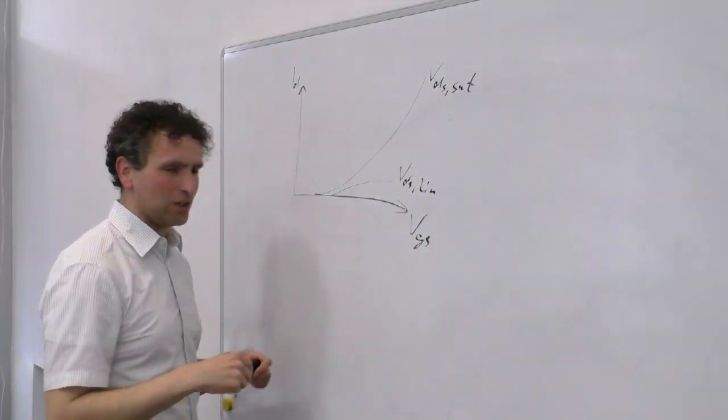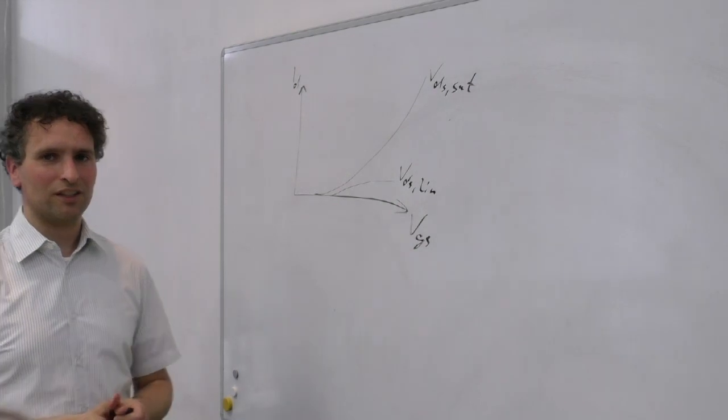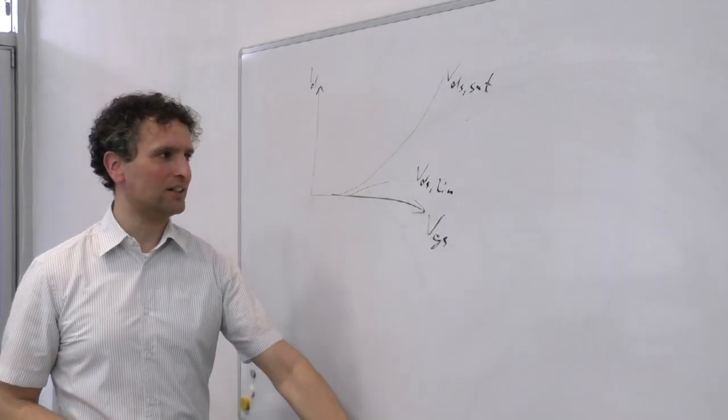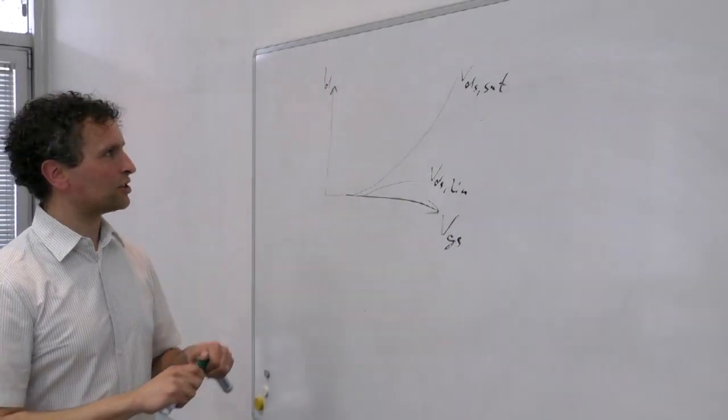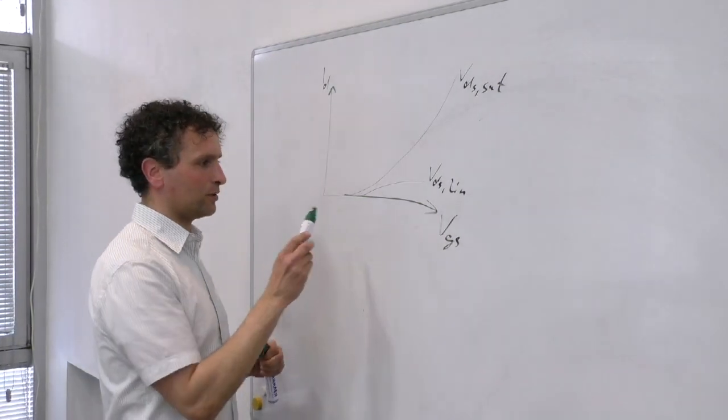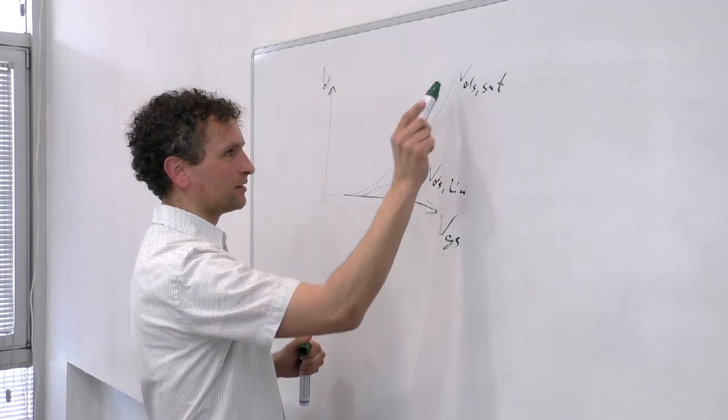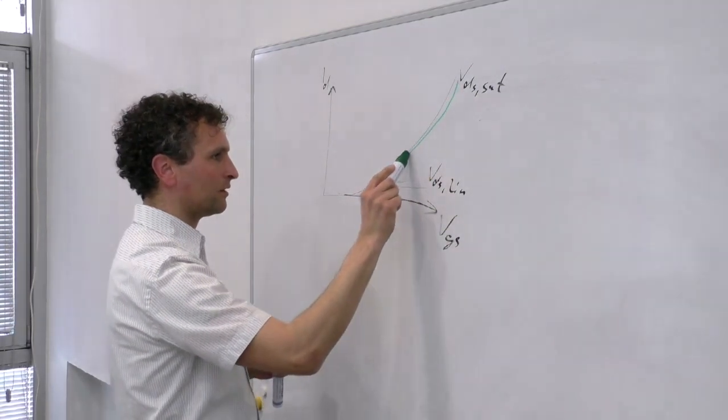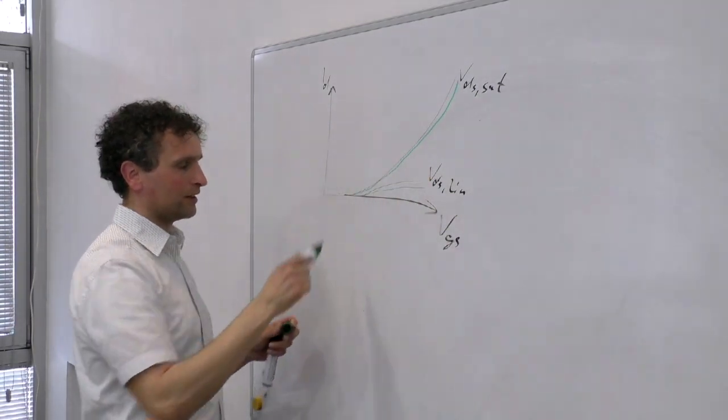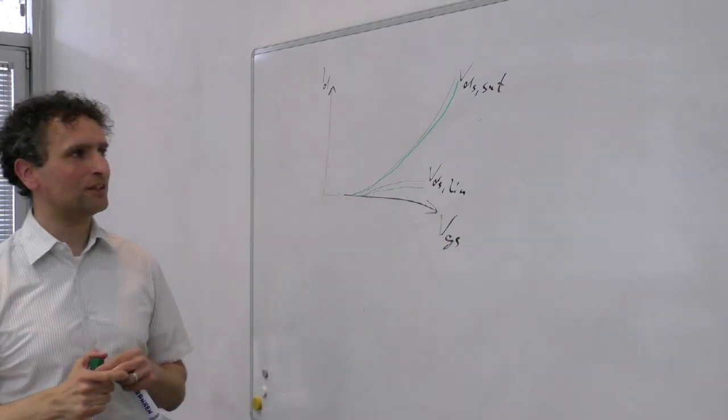So when it comes to aging, independent of what the effect particularly is, whether it's BTI, whether it's HCI, it leads to a reduction in the drain current that you can see in the IV curves. So you might end up with a line here and different line here, corresponding to the drain voltage that we have seen so far.